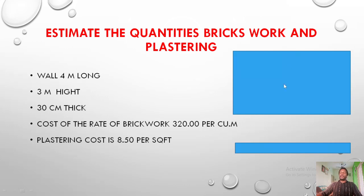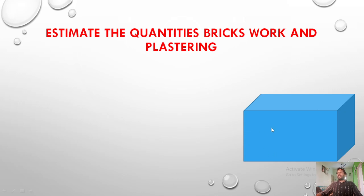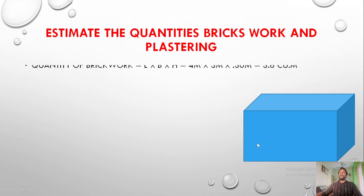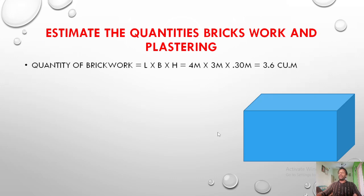Let's take a look at this detail. First of all, let's take a look at the length, breadth and height. The length is 4 meters, the breadth is 3 meters, and the thickness is 30 centimeters — that is 0.30 meters. We multiply the 3 meters and take a look at the cubic meters, and that gives us 3.6 cubic meters.